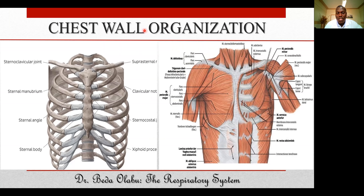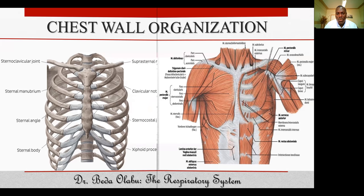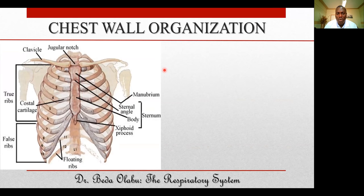Let's begin with the organization of the chest wall. The chest wall can be viewed to consist of the skeletal framework as well as the muscular framework — there are bones and other skeletal structures that form the framework, but there are also muscles that constitute it. Let's start with the skeletal framework.